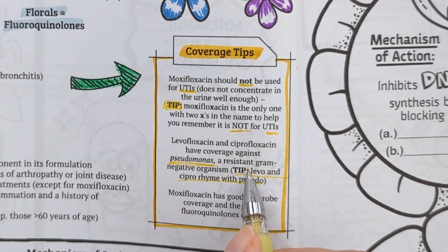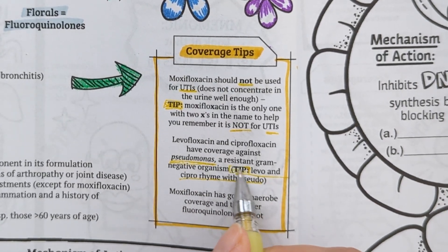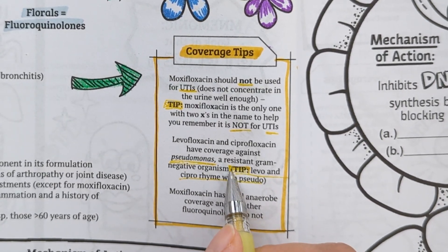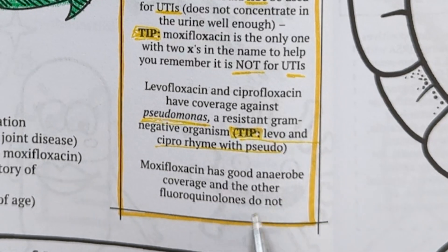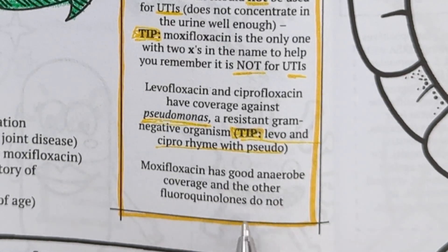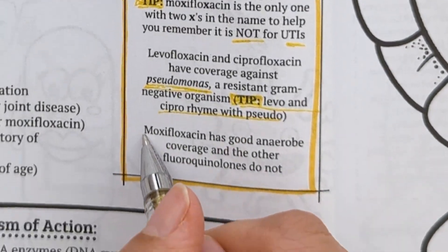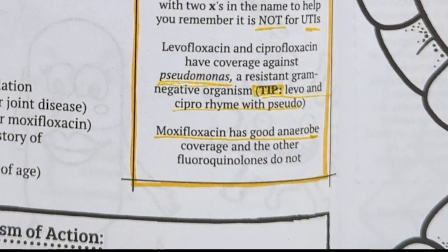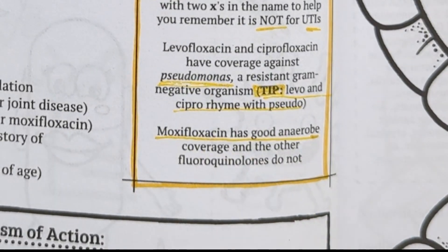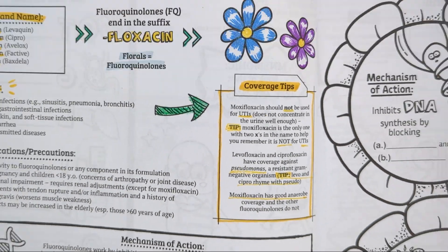Which antibiotics cover Pseudomonas, a resistant gram-negative bacteria? Think levofloxacin and ciprofloxacin — here's a tip: levo and cipro rhyme with pseudo. Another thing to note is that moxifloxacin has great anaerobic coverage, while the other fluoroquinolones do not.